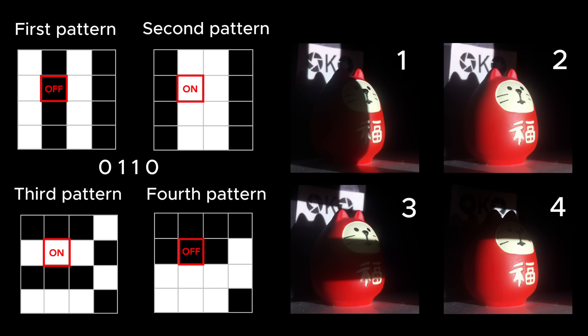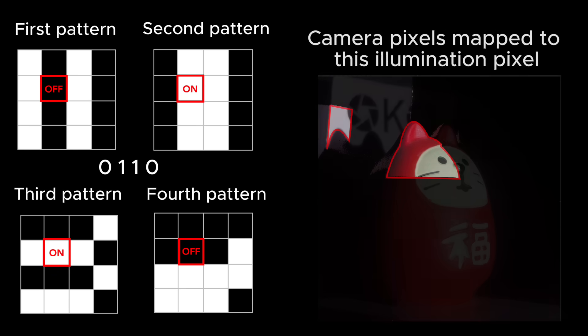The algorithm searches for all the camera pixels that only received light from the scene during the second and third pattern. Here are the camera pixels found by the algorithm. Because each illumination pixel has a unique binary code in the sequence, we know these camera pixels must correspond to that single illumination pixel.